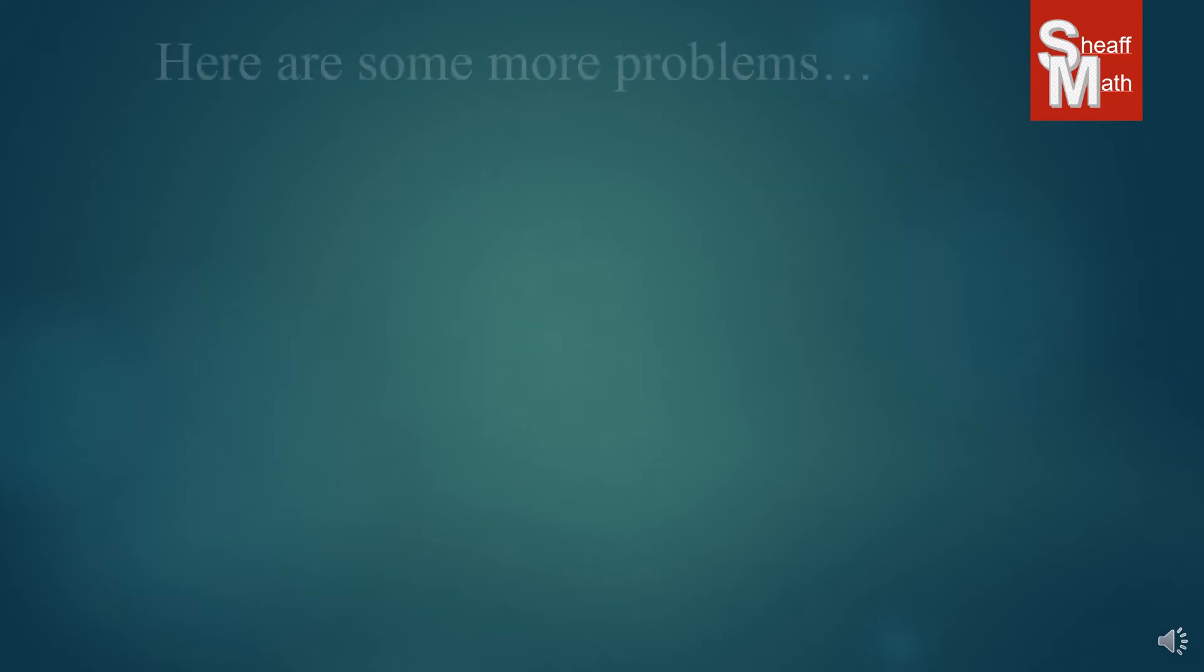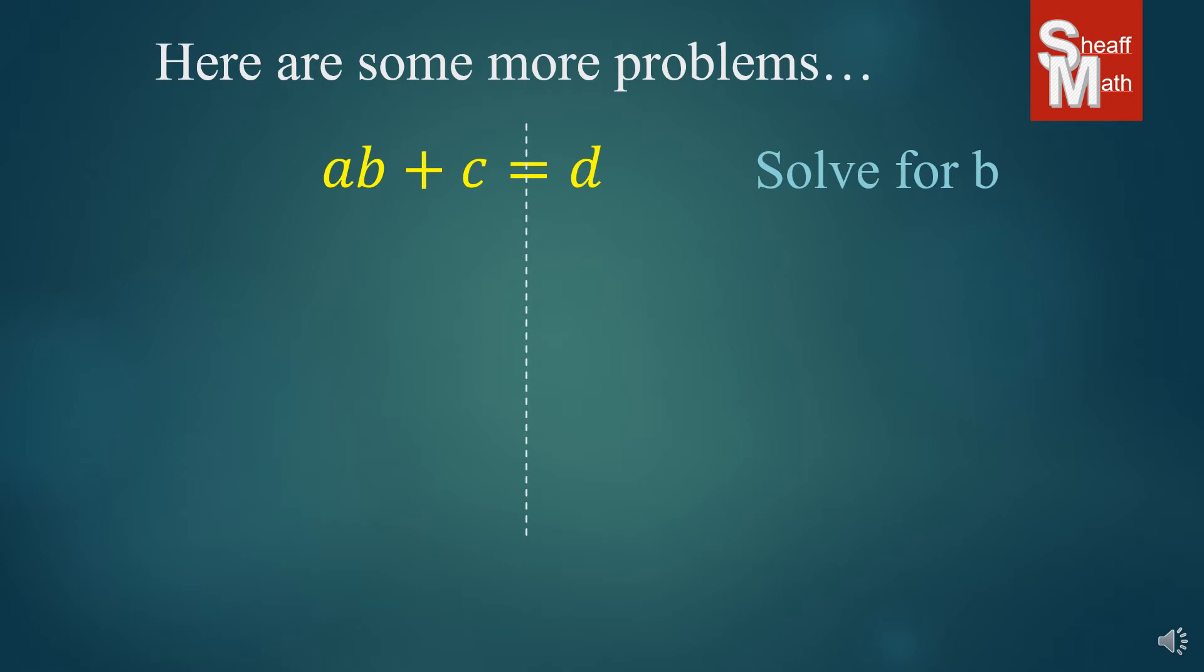Alright, here's some more problems. We have AB plus C equals D and we're told to solve for B. So what we're going to do is isolate that B. The first thing we always do when solving equations is get rid of the constant or the plus or minus number. And so we're going to subtract C on both sides, crossing that out.